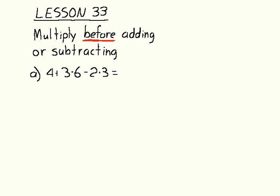We do our multiplication first. So we say 4 plus 18 minus 6. And I always add these in pairs. 4 plus 18 is 22 minus 6. That would equal 16. So that's our answer there.